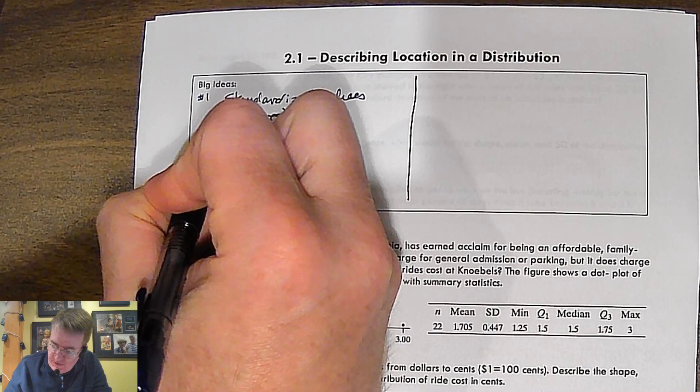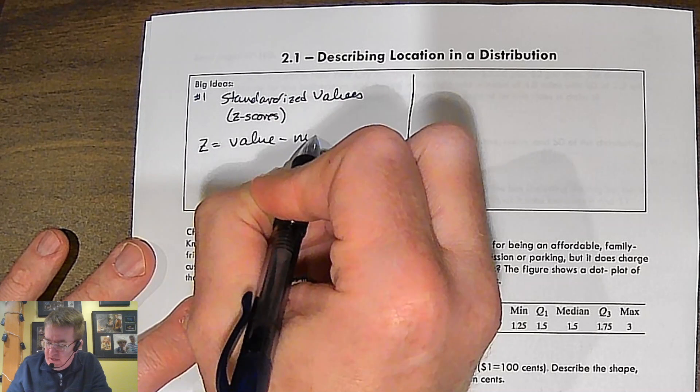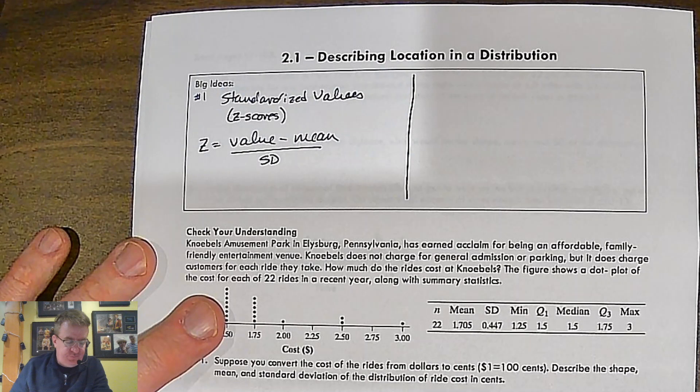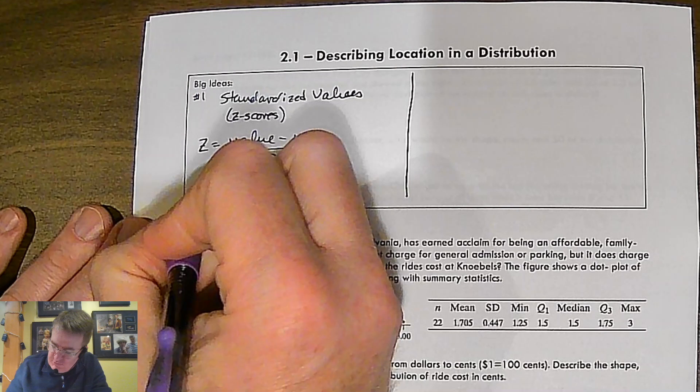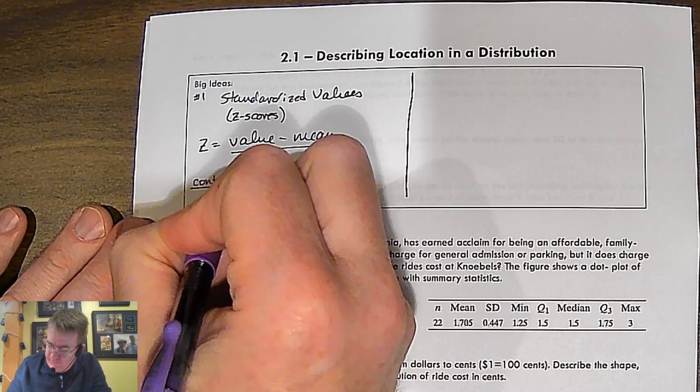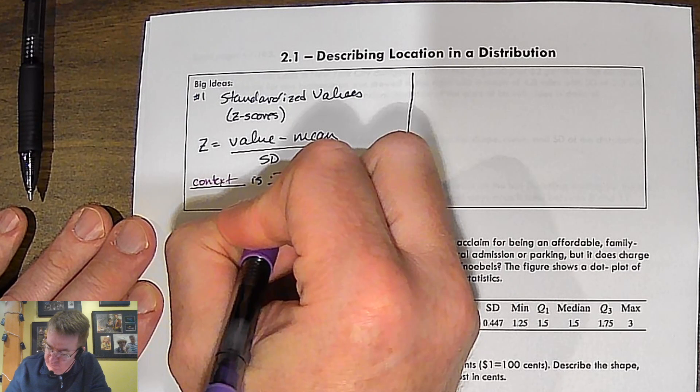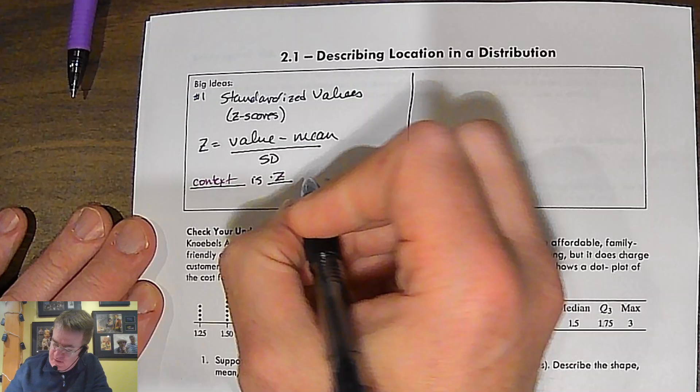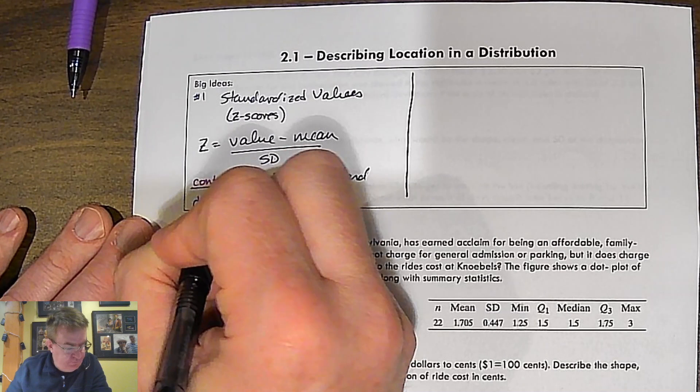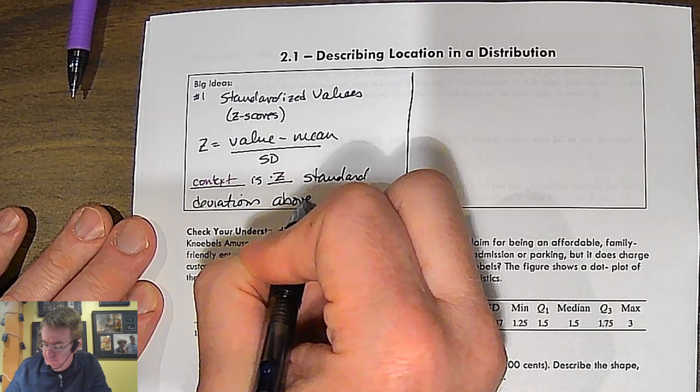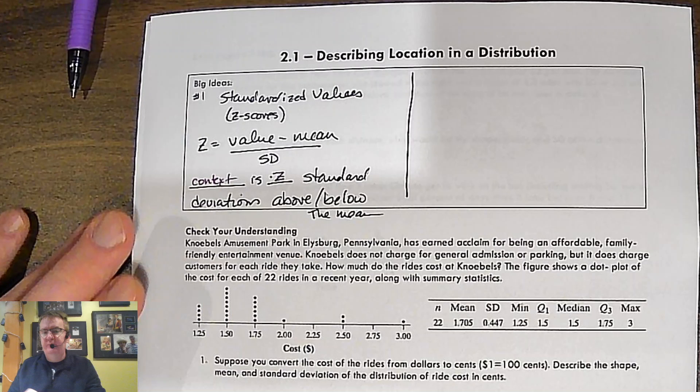We'll talk a lot about that as we go. So Z-score is, Z equals value minus your mean divided by the standard deviation. And the way that you describe this is you're going to have some sort of context, and I'm just going to write in blank context. Next is your Z-score, and you're going to say Z standard deviations above or below the mean. Okay, we'll do some examples down here in a little bit.